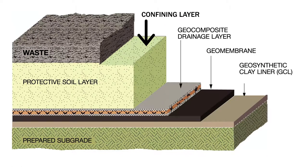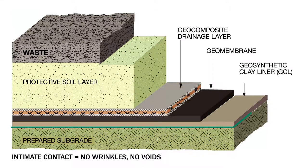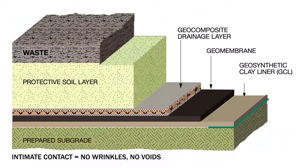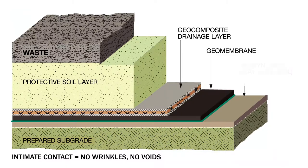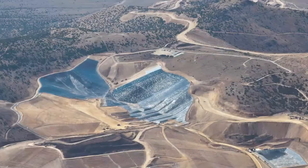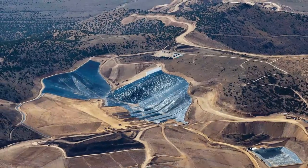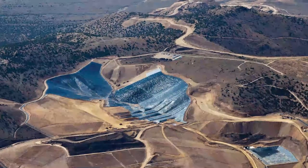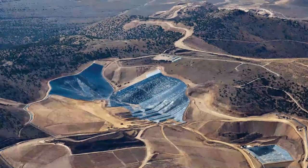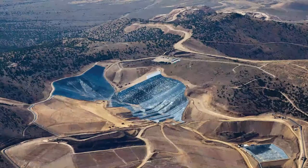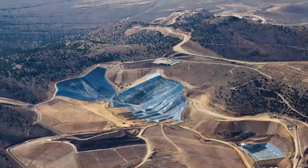The geosynthetic clay liner should not be left exposed. Importantly, there should be intimate contact with the soil beneath. If the design uses a composite system, the geosynthetic clay liner should also be in intimate contact with the geomembrane above. Whether it's a small basin installation or a large seepage control installation for a valley fill, confinement needs to be applied quickly to optimize barrier performance.